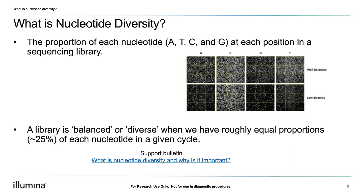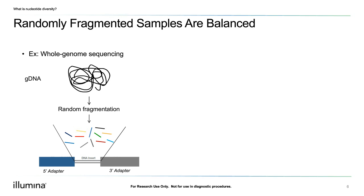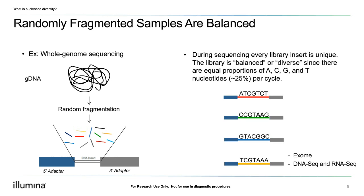Why does base diversity differ among different libraries? This is typically related to the desired application and corresponding library preparation. Samples derived from randomly fragmented whole genome samples are a great example of diverse and balanced libraries. Because the library is derived from the entire genome, the fragments will have a nucleotide diversity representative of the overall genome-wide nucleotide diversity for the organism. We can see that they each have an equal representation of each base in the cycle, and this library is said to be both diverse and balanced.